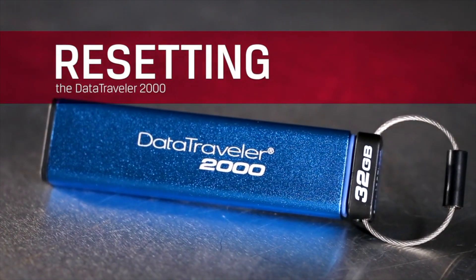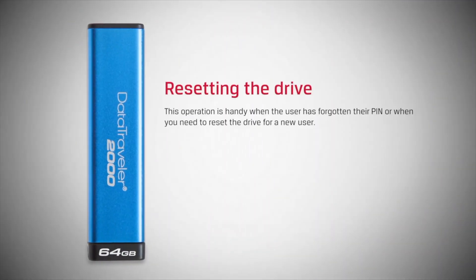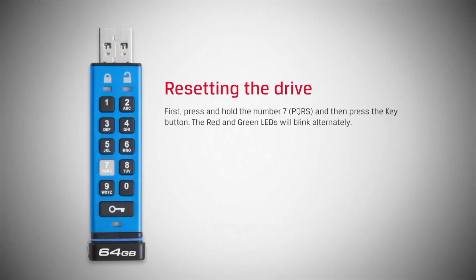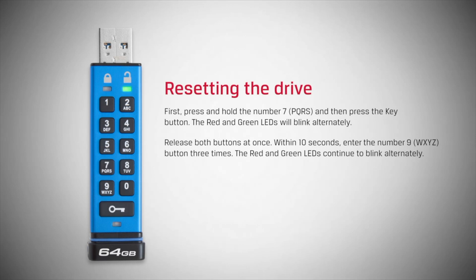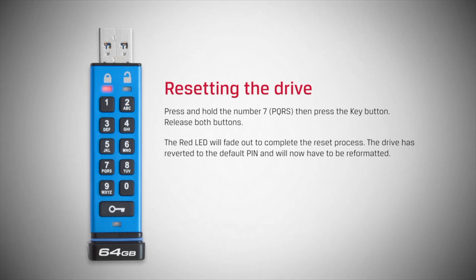This is the Kingston DataTraveler 2000 USB flash drive. It's easy to reset the drive to the default pin and erase the data when needed. This operation is handy when the user has forgotten their pin or when you need to reset the drive for a new user. Please note that all data will be erased and data recovery will not be possible once a new encryption is created. First, press and hold the number seven and then press the key button. The red and green LEDs will blink alternately. Release both buttons at once. Within 10 seconds, enter the number nine button three times. The red and green LEDs continue to blink alternately. Press and hold the number seven, then press the key button. Release both buttons. The red LED will fade out to complete the reset process. The drive has been reverted to the default pin and will now have to be reformatted.